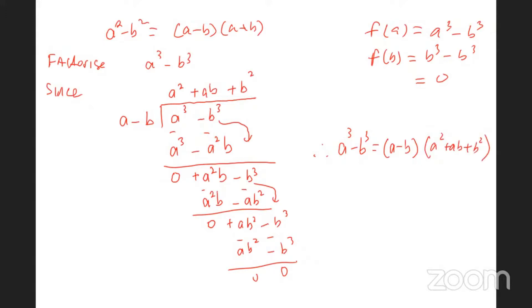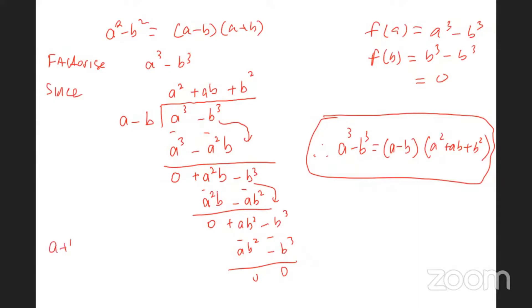Therefore, a cubed minus b cubed factorizes as (a minus b)(a squared + ab + b squared). For those who didn't get a chance to do the homework, now try the long division of (a plus b) into a cubed plus b cubed.